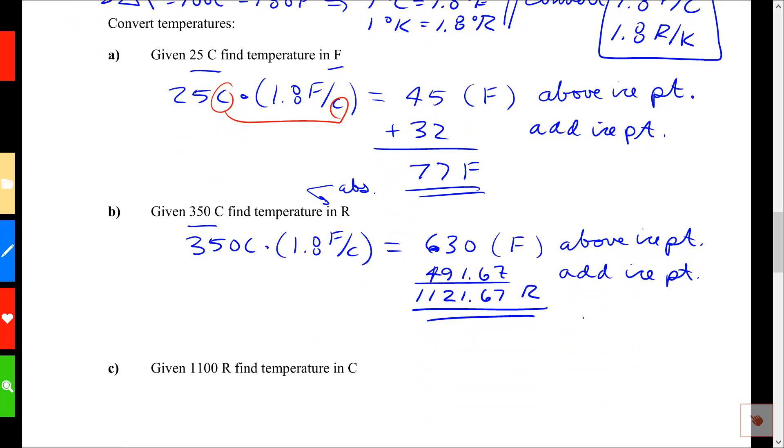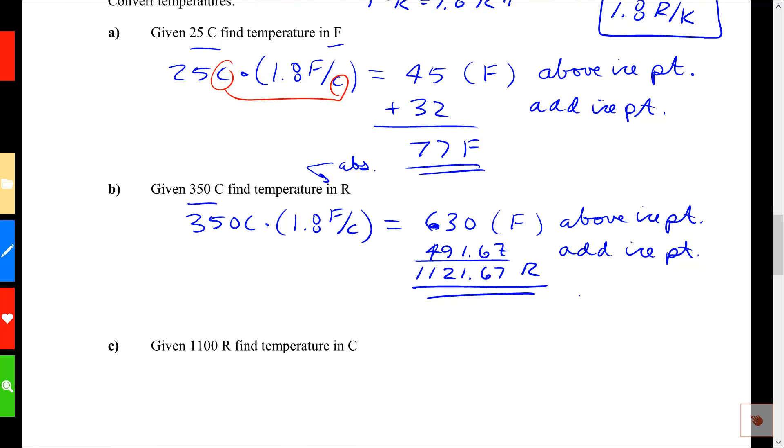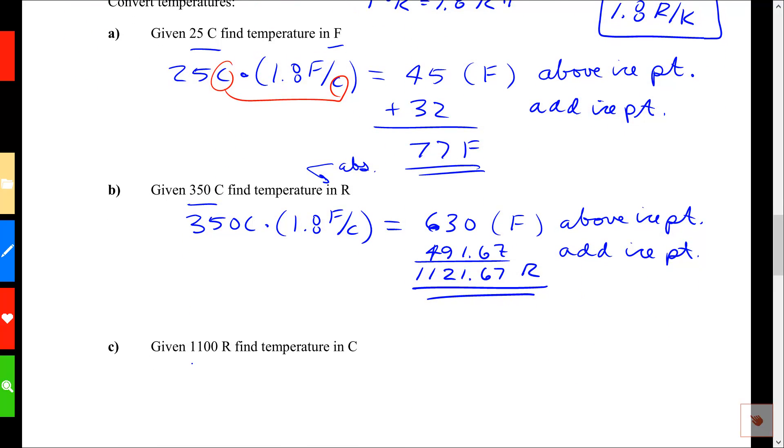Scrolling up, example C says, given 1100 degrees R, that's an absolute scale, find the temperature in centigrade that is not absolute. Alright, so I'm going to take my 1100R,